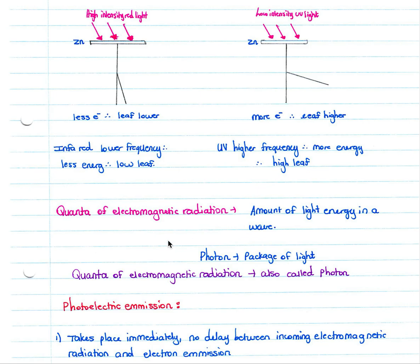A quanta of electromagnetic radiation is simply the amount of light energy in a wave. When we refer to a photon, a photon is simply a package of light — a quanta of electromagnetic radiation is also called a photon.